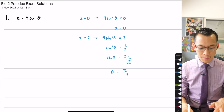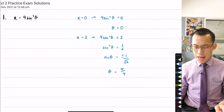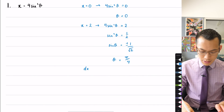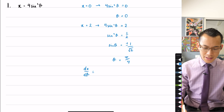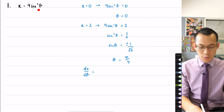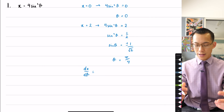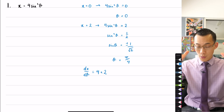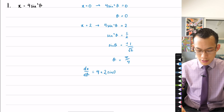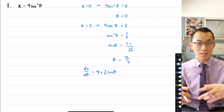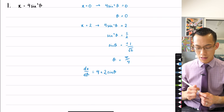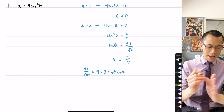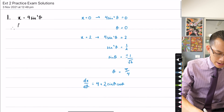I'll substitute all the x's for 4 sine squared thetas in the integrand. For the third piece — the variable of integration — I need to know dx on d theta, so it's a straightforward differentiation. The 4 is a constant out the front, and applying the chain rule to sine squared theta: multiply by the power 2, reduce the power to sine theta to the 1, then multiply by the inside derivative cos theta, giving dx on d theta equals 4 times 2 sine theta cos theta.